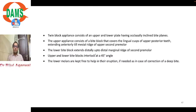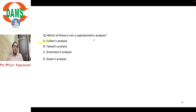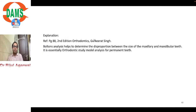Which is not a cephalometric analysis: Tweed's, Downs', Grummon's, or Bolton analysis? Tweed's and Downs' are lateral cephalometric analyses. Grummon's is a PA (posterior-anterior) cephalometric analysis. Bolton analysis is a model analysis used to estimate tooth proportion — anterior and posterior ratios. The correct answer is Bolton analysis.